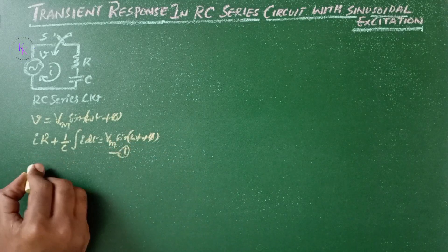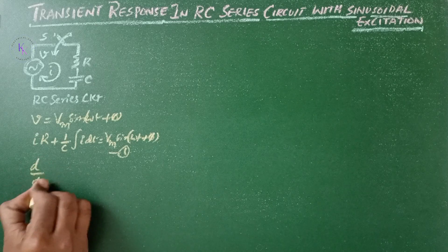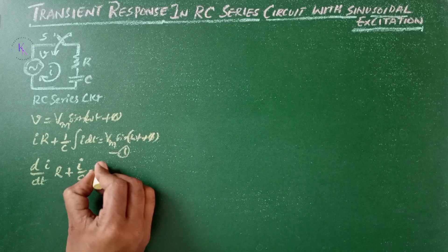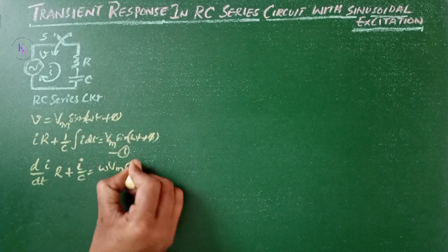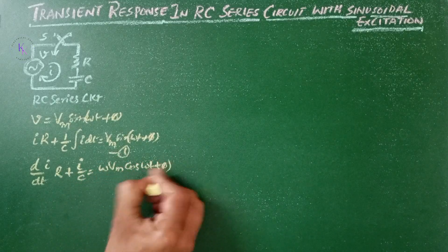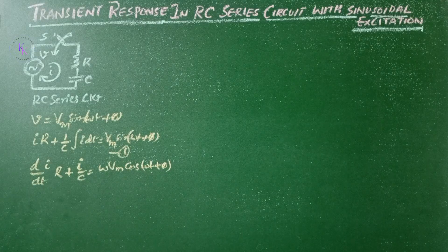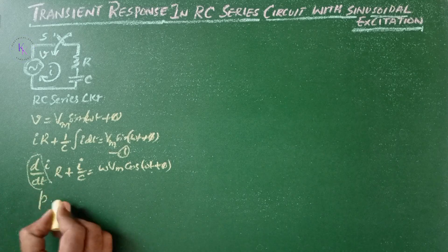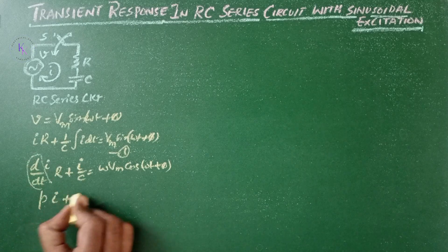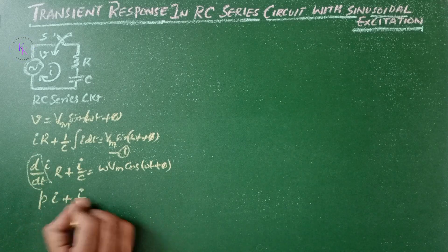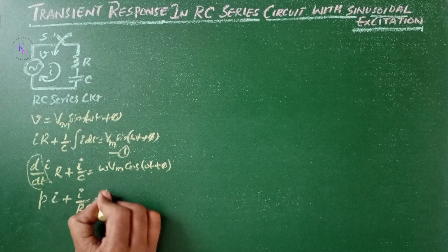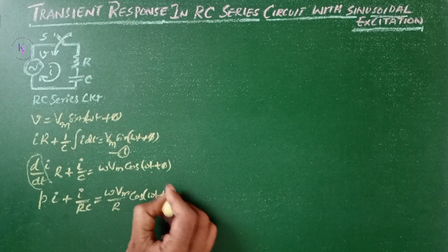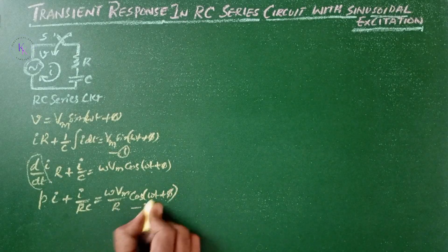Differentiating both sides gives d/dt of IR plus I/C equals ω·Vm·cos(ωt + φ). Now dividing by R and considering d/dt as operator P, we get P·I plus I/(RC) equals ω·Vm/R · cos(ωt + φ). Let this be equation number 2.